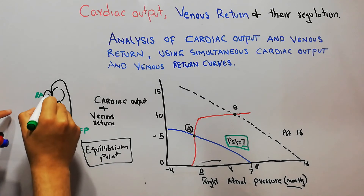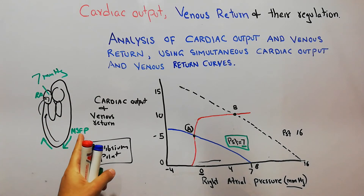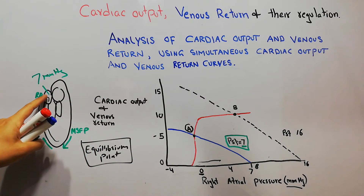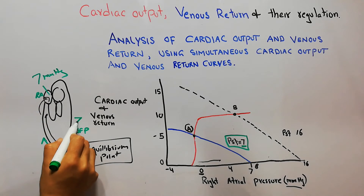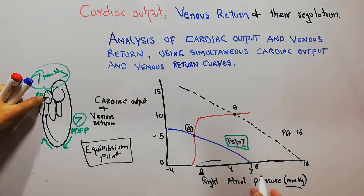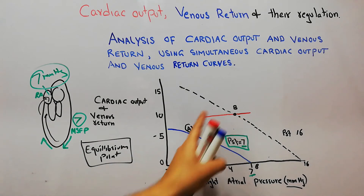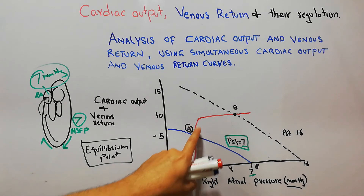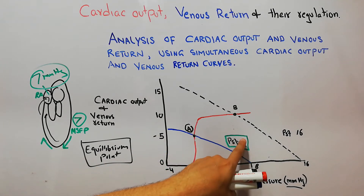When the right atrial pressure reaches 7 mm of mercury, the mean systemic filling pressure is no longer able to push more blood into the right atrium — both pressures are equal — so venous return becomes zero. The red and blue curves have been drawn for a mean systemic filling pressure of 7 mm of mercury.